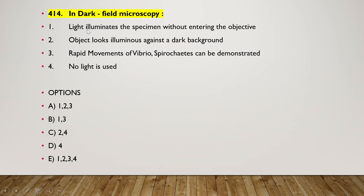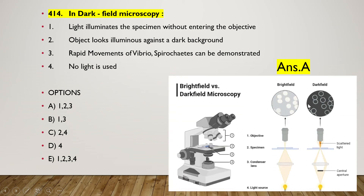Next question: in dark field microscopy — (1) light illuminates the specimen without entering the objective, (2) organisms are illuminated against a dark background, (3) rapid movement of vibrio and spirochetes can be demonstrated, (4) no light is used. The right answer is option A — the first three options are correct. Here we can see the dark field microscopy image — the background is dark.